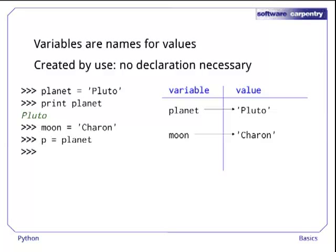We can assign variables to variables, too, with statements like p assigned planet. This creates a new variable as before, but this time, that variable points to the same value that planet was pointing to. Sure enough, if we print p, Python displays the string Pluto.